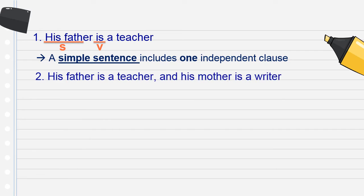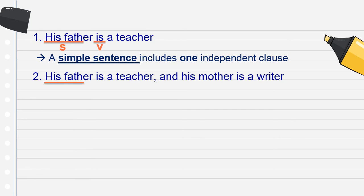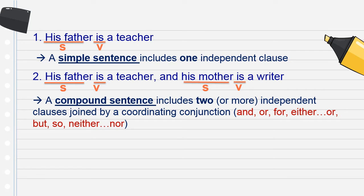Let's look at example two: 'His father is a teacher and his mother is a writer.' We analyze it: his father — subject, is — verb; his mother — another subject, is — another verb. A sentence with two independent clauses joined by a coordinating conjunction is called a compound sentence — câu ghép. It has two or more independent clauses joined by coordinating conjunctions such as and, or, for, either/or, but, so, neither/nor.